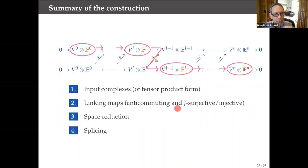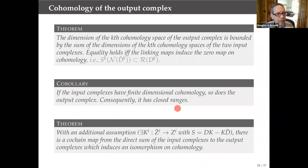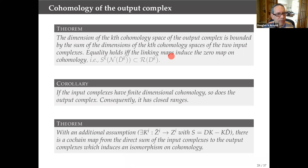The properties of the output complex are captured by two main theorems. The most important says: the dimension of the k-th cohomology of the output complex is bounded by the sum of the dimensions of the k-th cohomologies of the two input complexes. So if the two input complexes have finite-dimensional cohomology, the output complex does too — and we get all the consequences for free. With an additional condition on the linking maps, we get equality rather than just an upper bound. With yet another assumption, we get an actual isomorphism between the cohomologies of the output and input complexes.